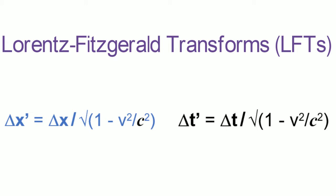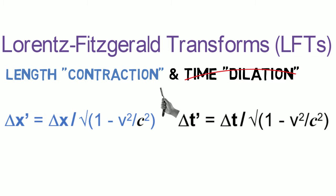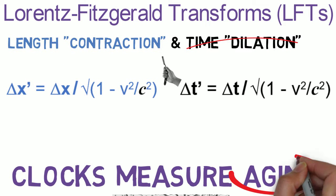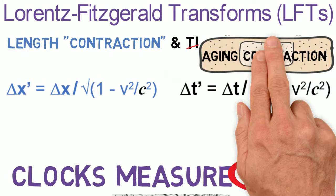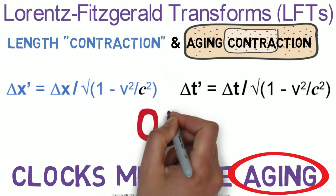The Lorentz-Fitzgerald Transforms allow calculation of relative durations and lengths. But it's confusing that special relativity uses opposite terms, contraction and dilation, to indicate essentially the same relations. Fixed prefers the consistency of length contraction and aging contraction.